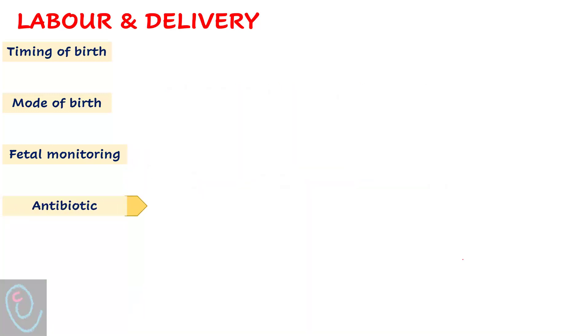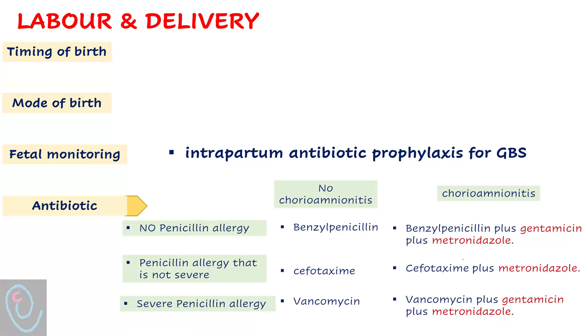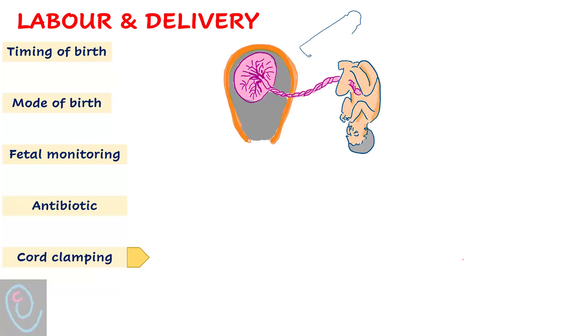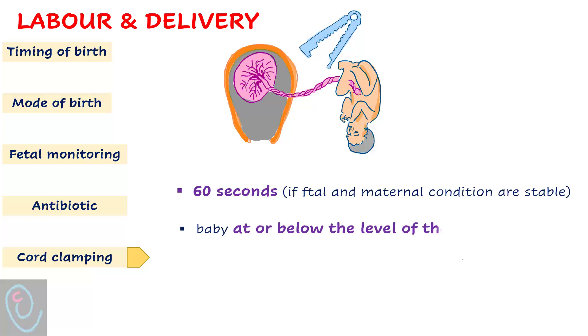Offer intrapartum antibiotic prophylaxis for GBS. Wait at least 60 seconds before clamping the cord. If maternal and fetal conditions are stable, position the baby at or below the level of placenta before clamping the cord.